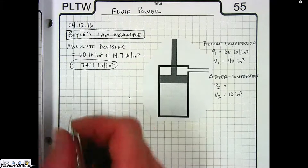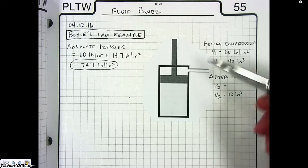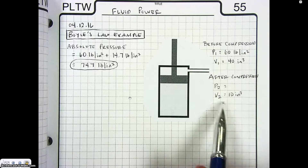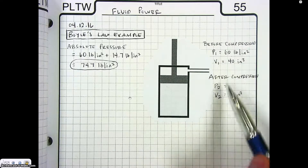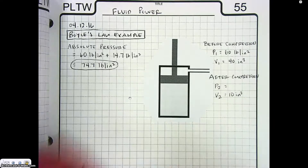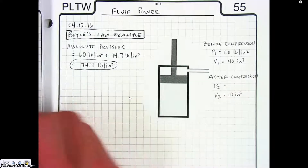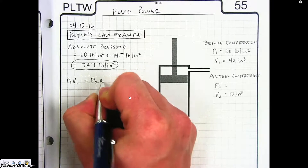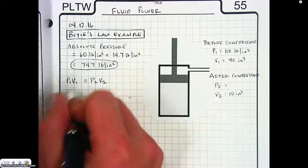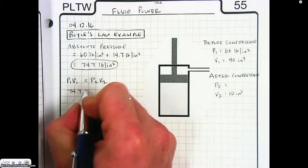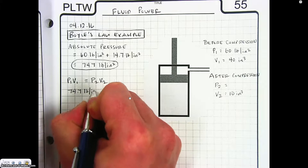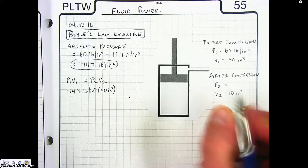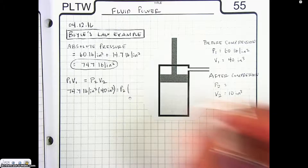We can use our formula to solve for P2. If we have a gauge pressure of 60 pounds per square inch at 40 cubic inches of volume and we compress that volume to 10 cubic inches, what's the resulting pressure? Boyle's Law says P1 times V1 equals P2 times V2. So P1 is 74.7 pounds per square inch — we have to use absolute pressure — times the volume of 40 cubic inches. That is equal to P2, which is what we're solving for, times V2, which was 10 cubic inches.